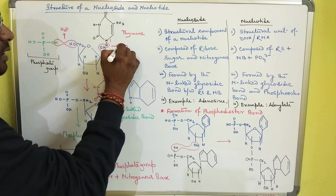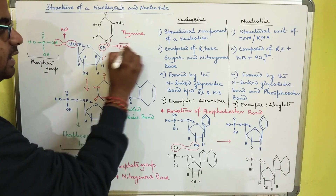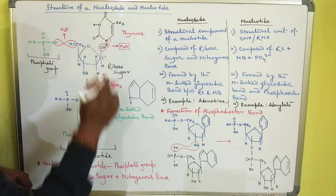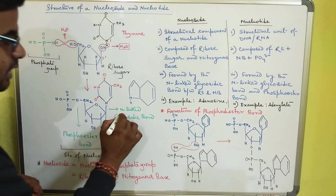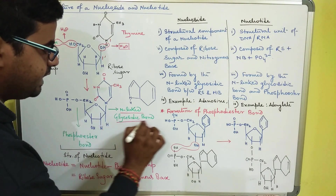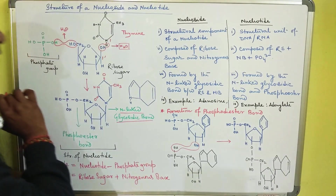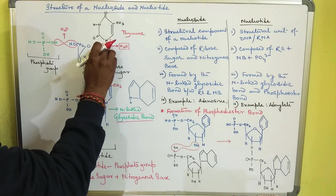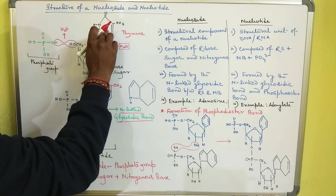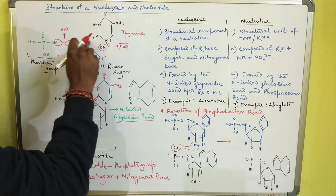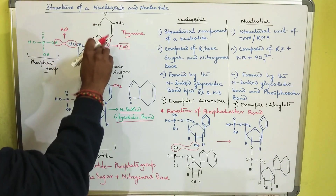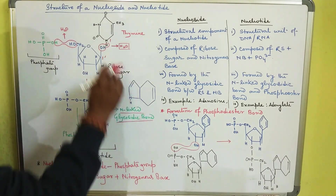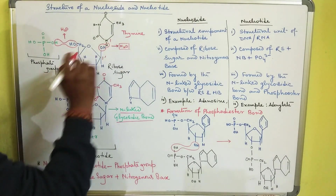As a result, one molecule of water is removed, and the bond that is formed is called the N-linked glycosidic bond. It is N-linked because nitrogen is present, and it is called a glycosidic bond because a carbohydrate is being attached to the nitrogenous base.